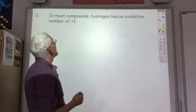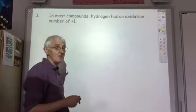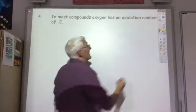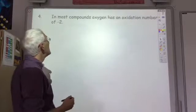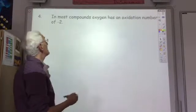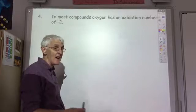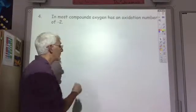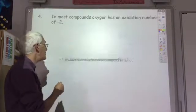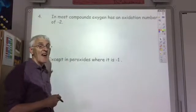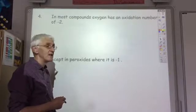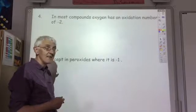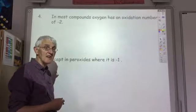The third rule is that in most compounds, hydrogen will have an oxidation state of plus one. The fourth rule is that in most compounds, oxygen has an oxidation number of minus two, as in the previous examples. But there is one common exception to this rule — when you have peroxides, like hydrogen peroxide. In those circumstances, the oxidation number of the oxygen is minus one.